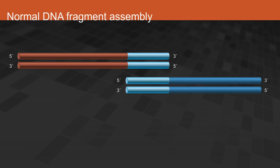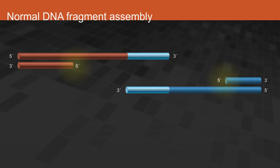During fragment assembly, T5 exonuclease will remove the bases on the 5' end, generating a 3' overhang.